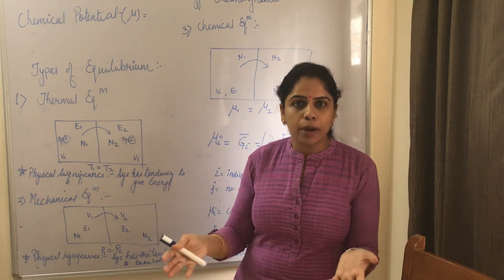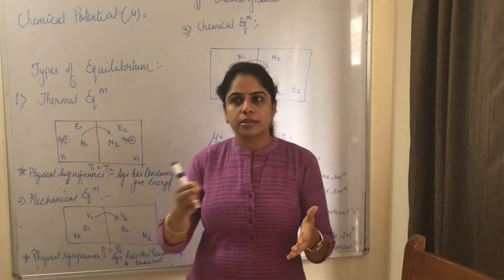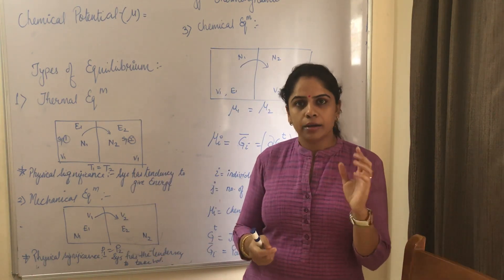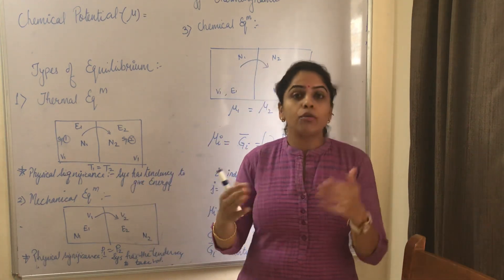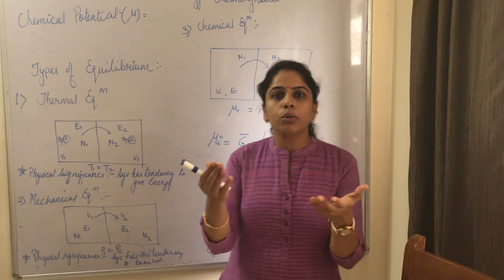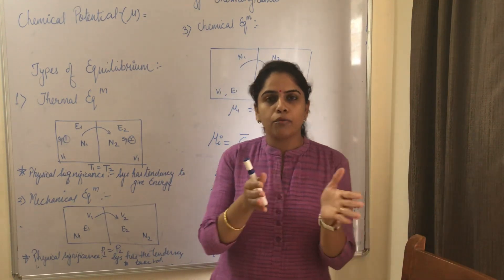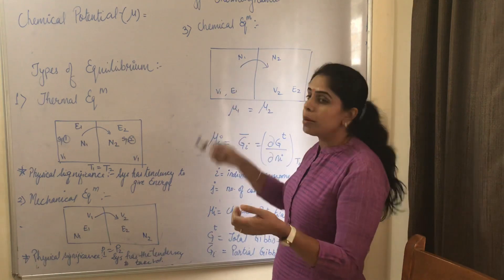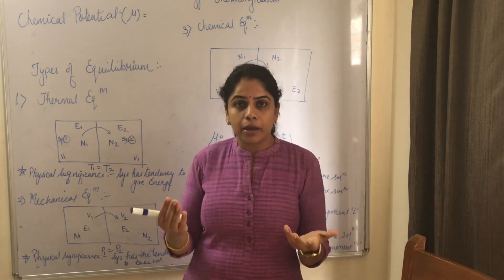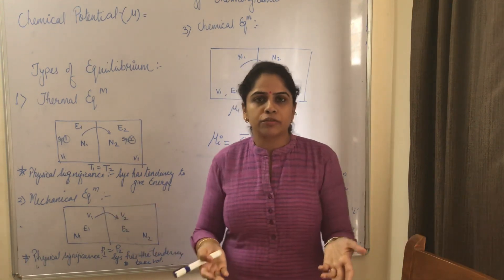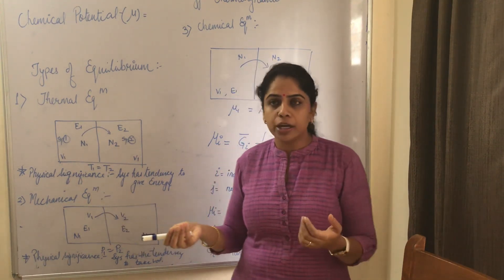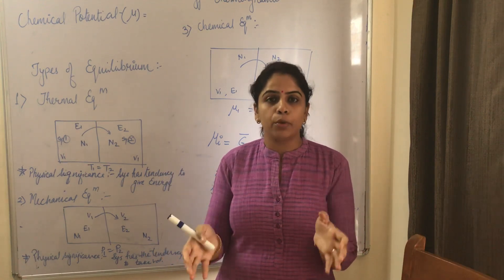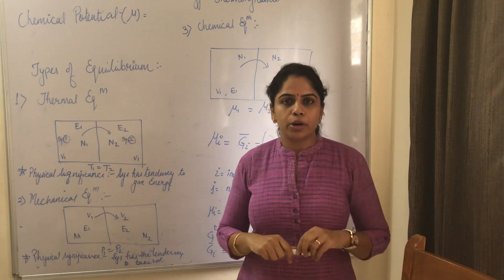In chemical industries, we often deal with solutions. A solution is a mixture of a number of components. If there are J number of components present in a solution, and you want to know the behavior of any individual component, you can observe how changing the number of moles of that component affects the free energy. Chemical potential helps us measure this — it can relate to Helmholtz free energy, Gibbs free energy, or any kind of potential — and helps us understand the real behavior of any component I in the solution.